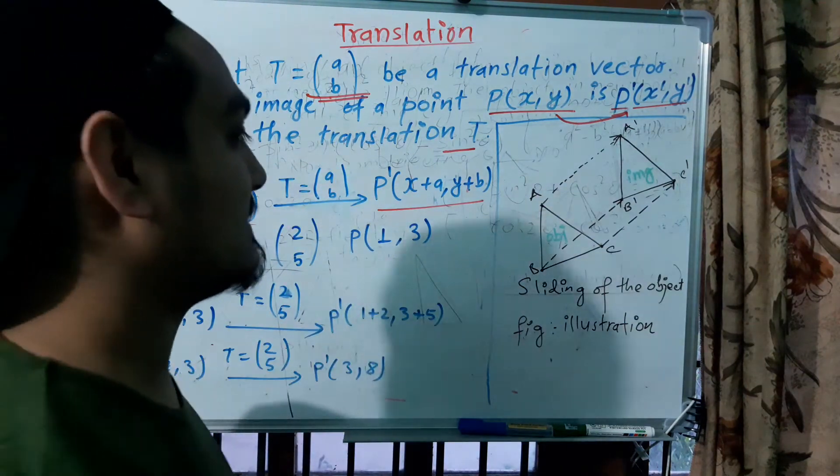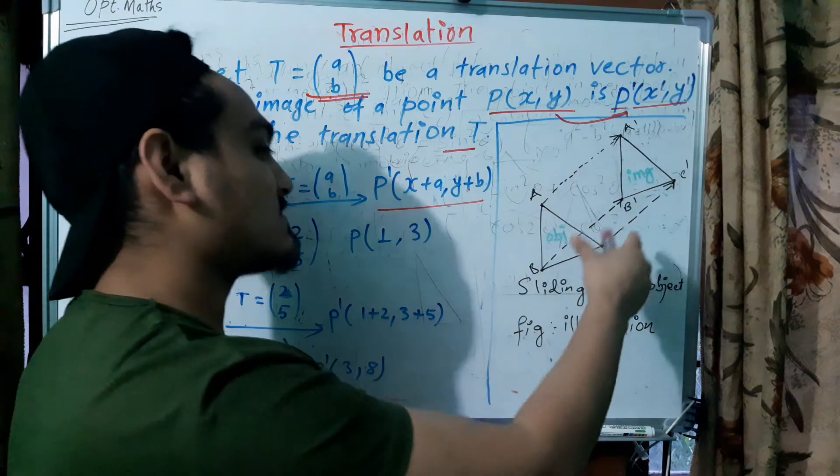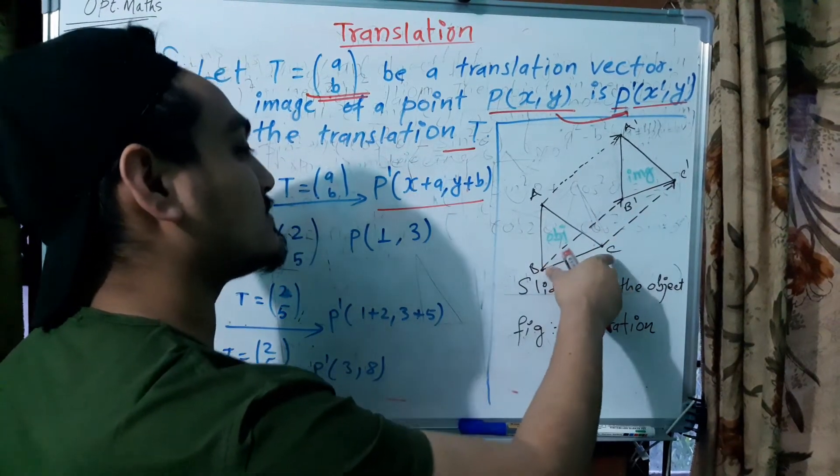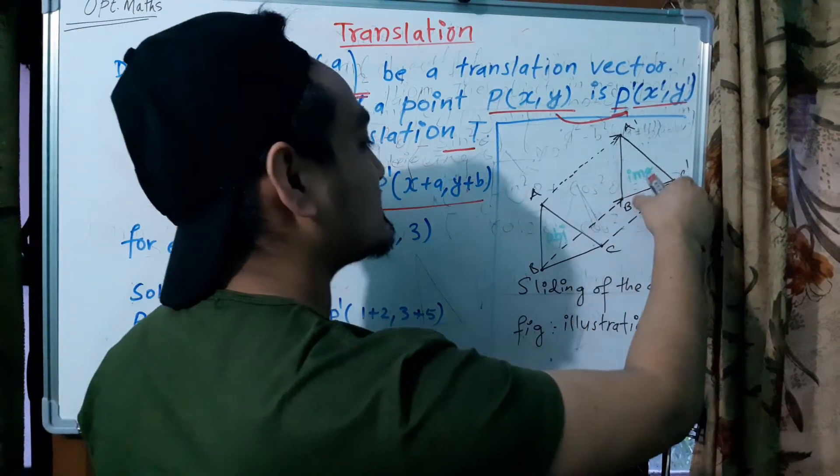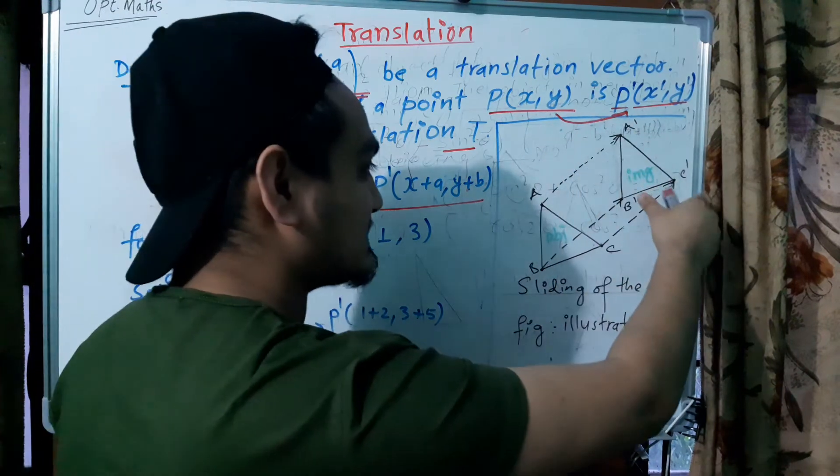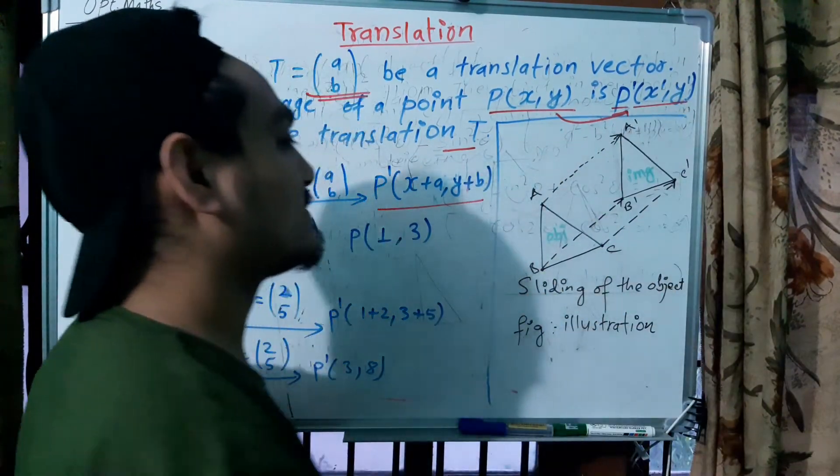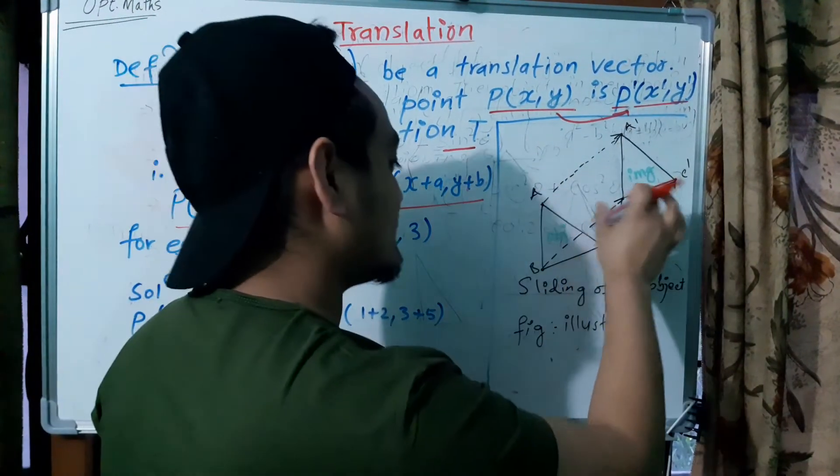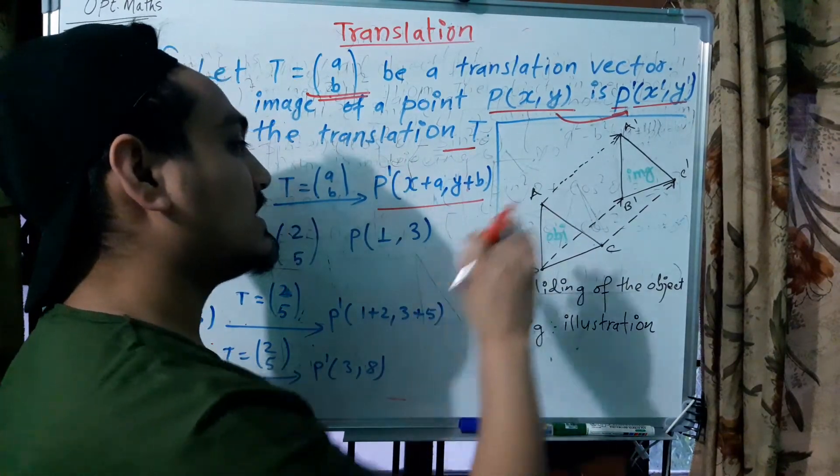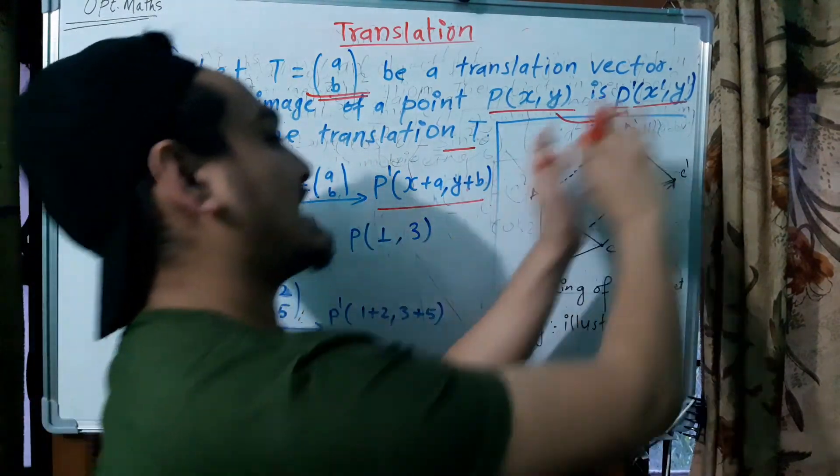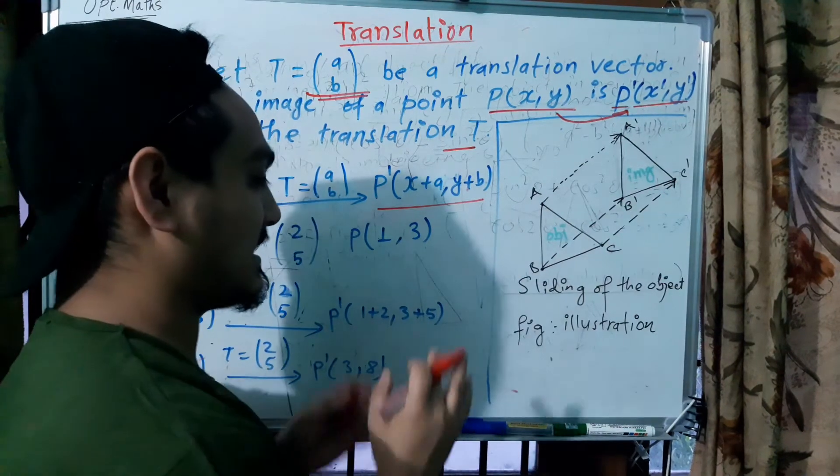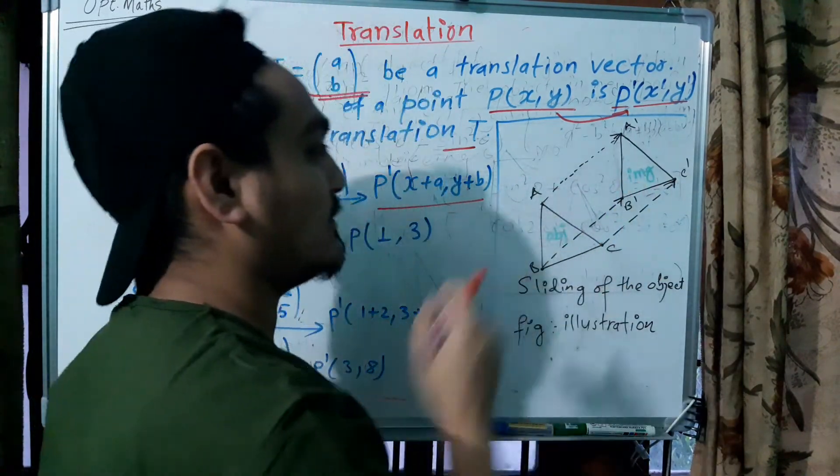Translation transformation: one object's origin to the object's new position. It's a movement, a slide - the transformation is a sliding of the object.